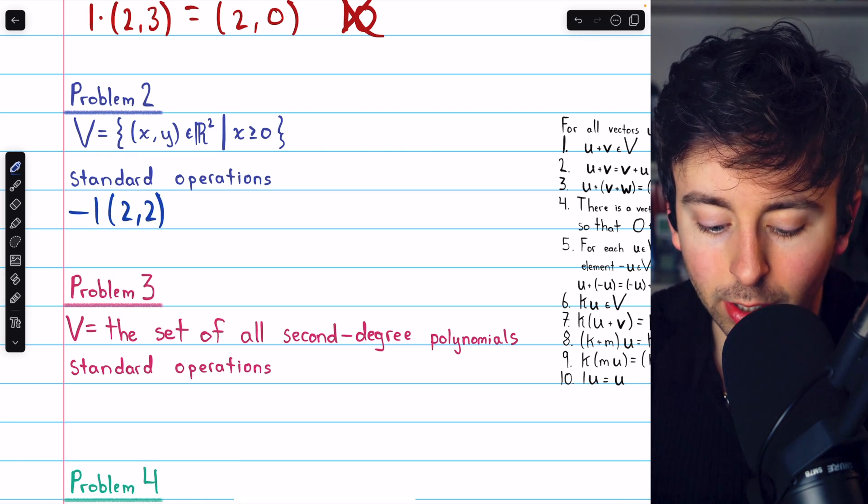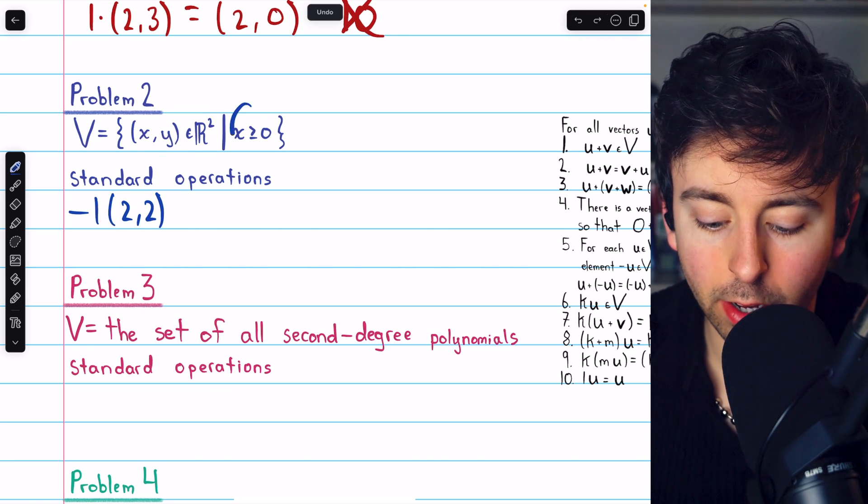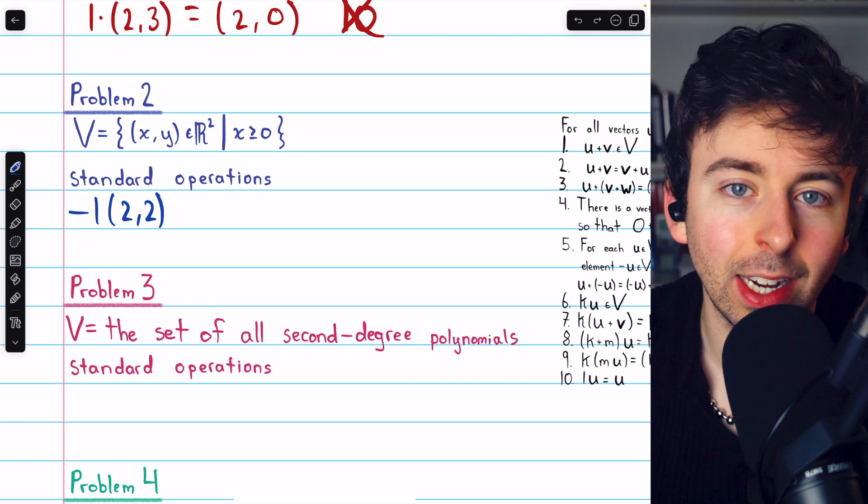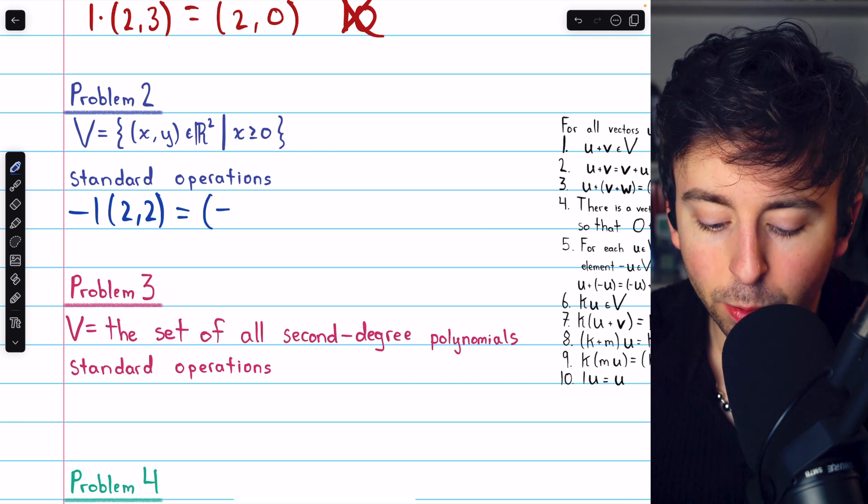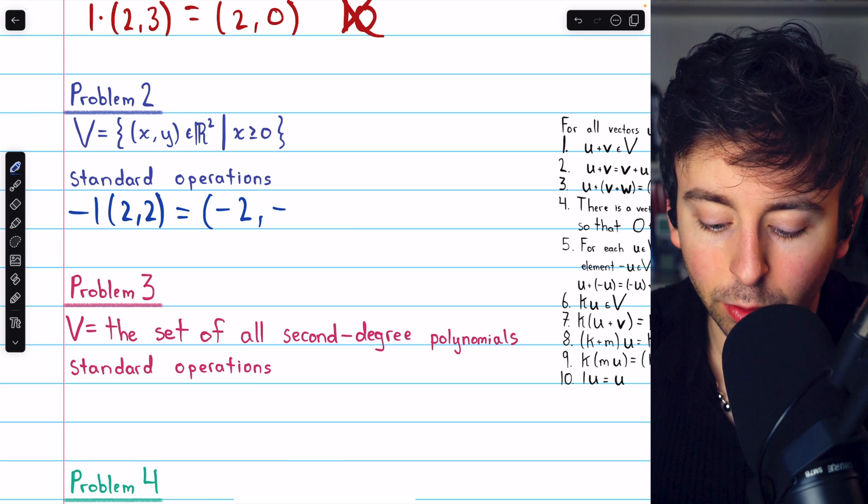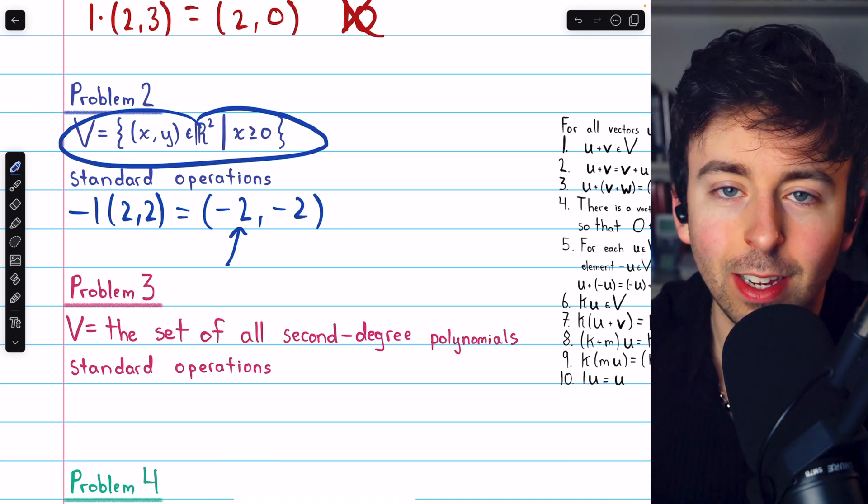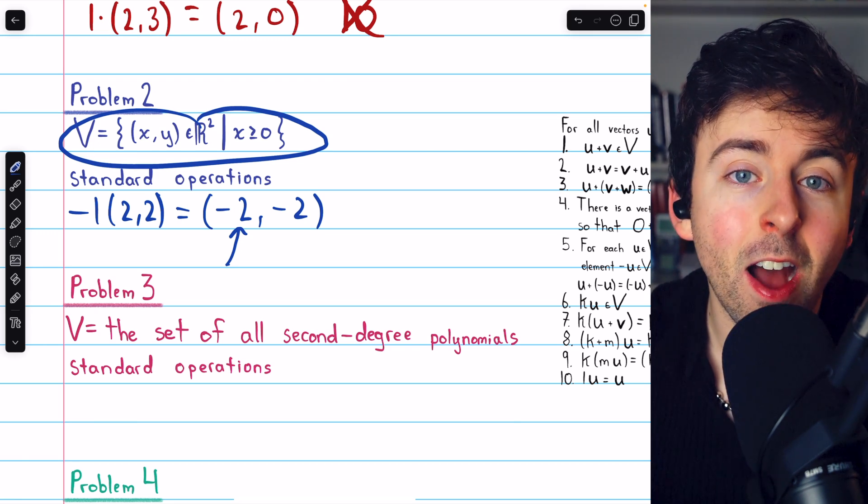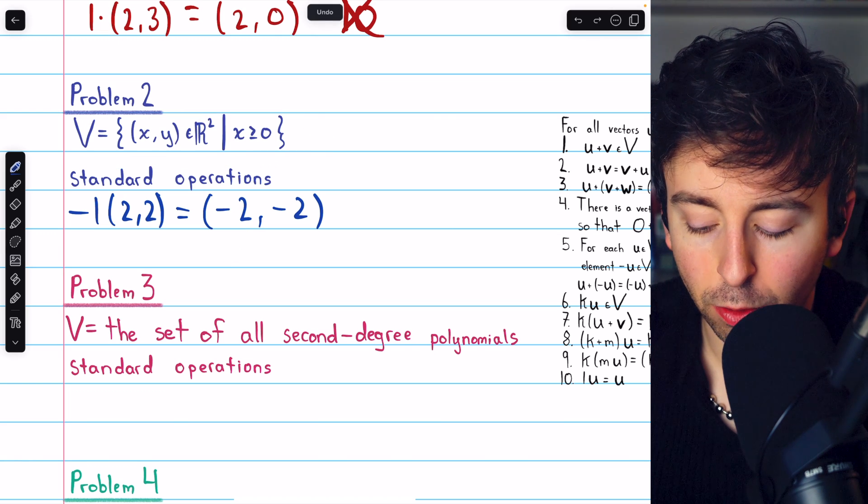certainly this vector is in our set because it's an ordered pair from R squared where the x component is non-negative. But if we multiply it by the scalar negative 1, then this produces the vector (-2, -2), which is not in the set because the x component here is negative. So it's not closed with respect to scalar multiplication, and so it's not a vector space.